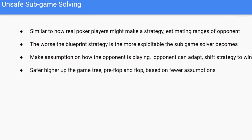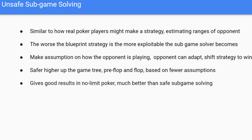That said, it's very safe the higher up the game tree we go — preflop and flop — where we're not making many compounding assumptions. In fact, in Libratus, the no-limit heads-up player, they use unsafe subgame solving on the first two betting rounds, the flop and the preflop. In practice, it's not very exploitable in no-limit poker. But in smaller subgames, it can be very exploitable, so be aware of which domain you're using it in.